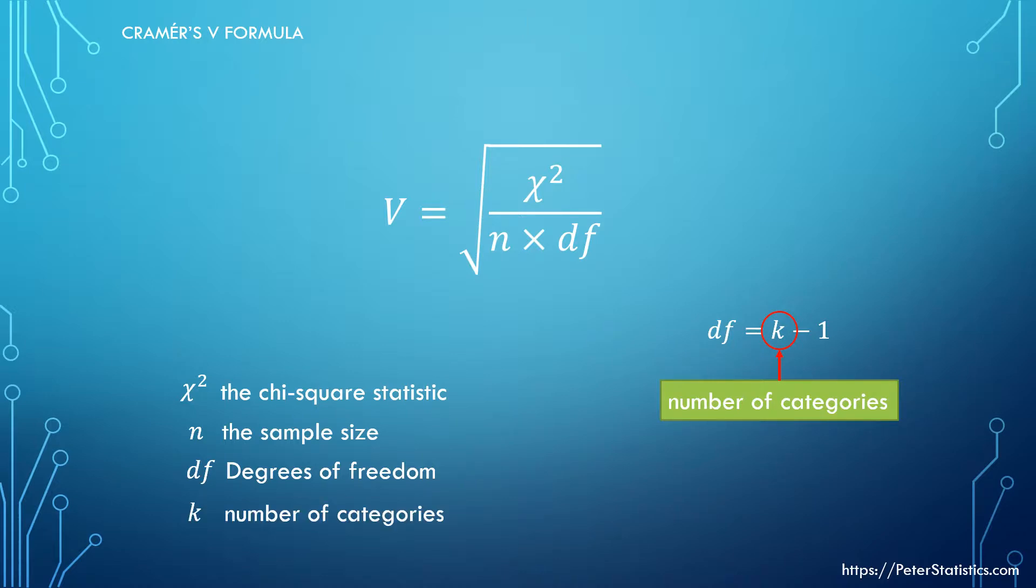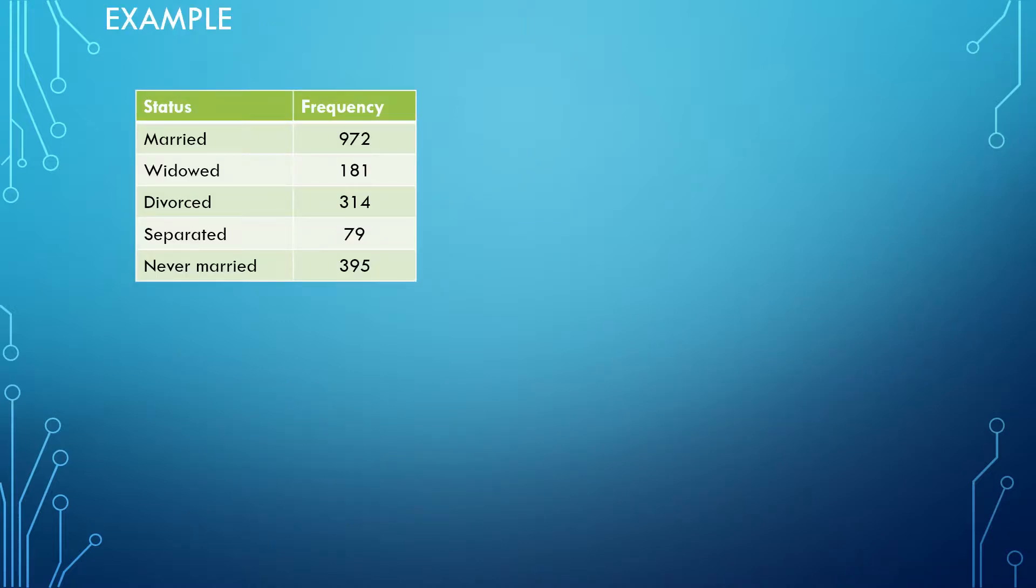Let's use these formulas in an example. Here is the example I also used in the calculation of the Pearson chi-square goodness of fit test. We are given some frequencies of different marital statuses and need to calculate Cramér's V. Start with the degrees of freedom, which is k minus 1, where k is the number of categories.